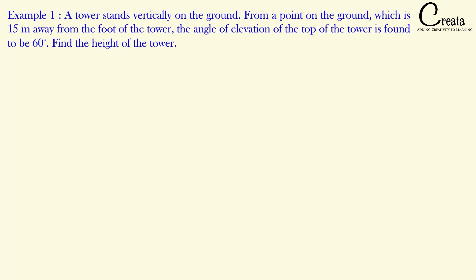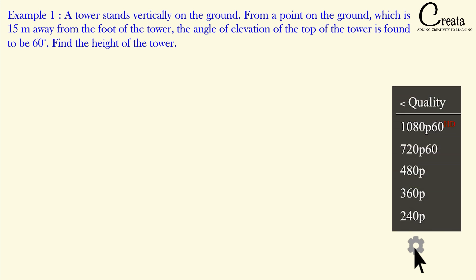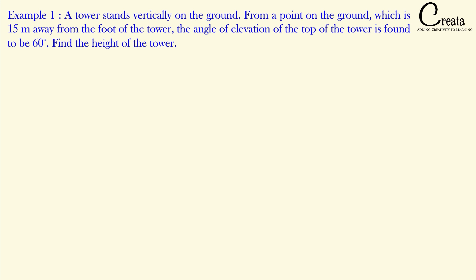Without further delay, let's start. Example number 1: A tower stands vertically on the ground. From a point on the ground which is 15 meters away from the foot of the tower, the angle of elevation of the top of the tower is found to be 60 degrees. Find the height of the tower.